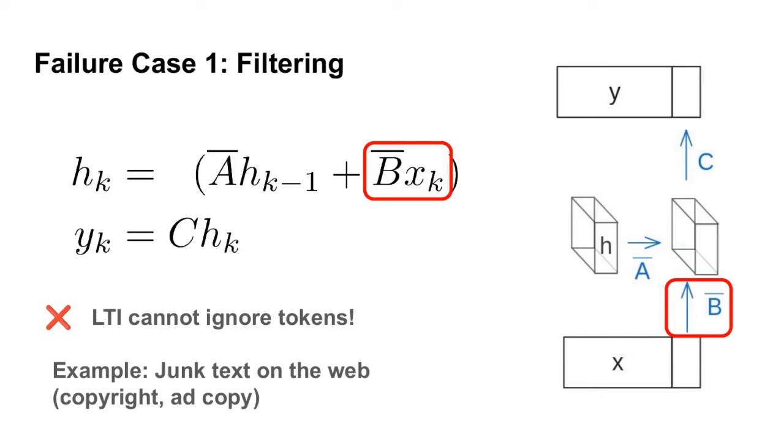The B-bar matrix has to be the same for every word, which means that if there's some x_k you want to drop, you basically just have to add it to your hidden state no matter what.